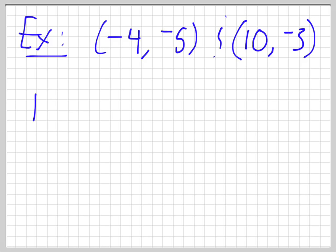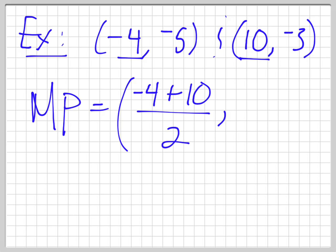So let's see. So the midpoint, I'll have negative 4 plus 10, so that's my two x's, divided by 2. And then I have my two y's, negative 5 plus negative 3, divided by 2.